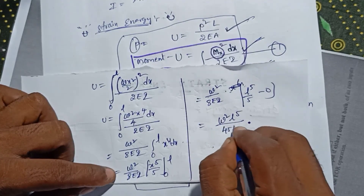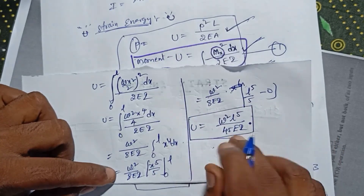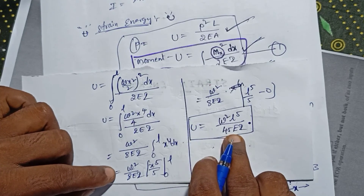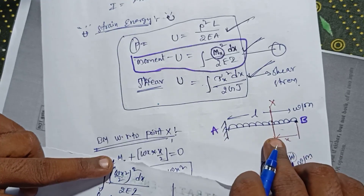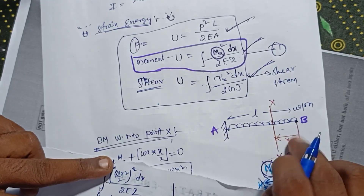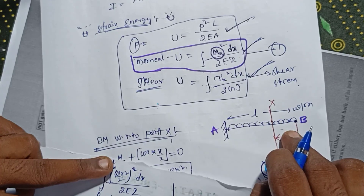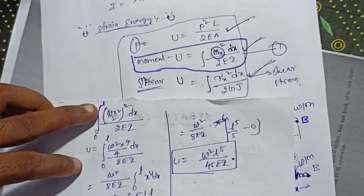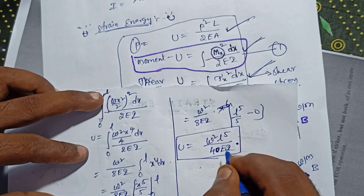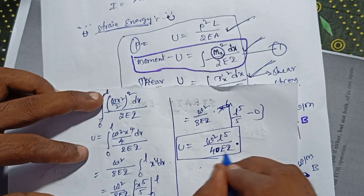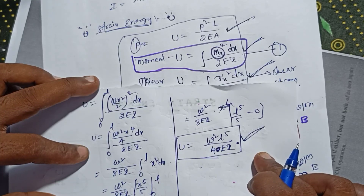Substituting the limits: U = w²/8EI × L⁵/5 − 0 = w²L⁵ / 40EI. Therefore the total strain energy stored in a cantilever beam subjected to uniformly distributed load is U = w²L⁵ / 40EI.